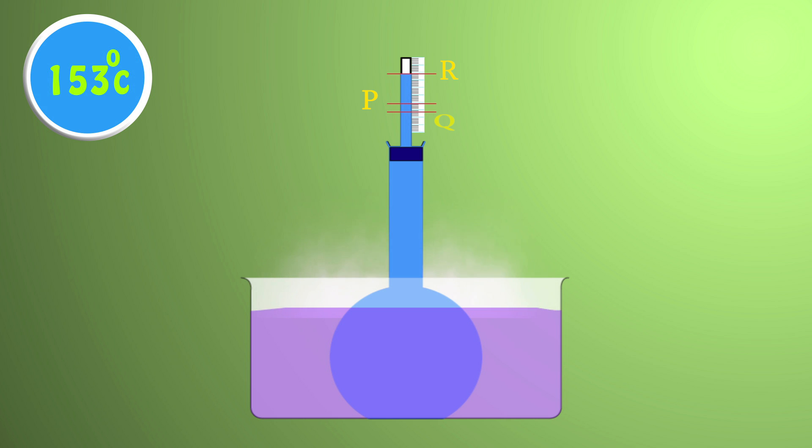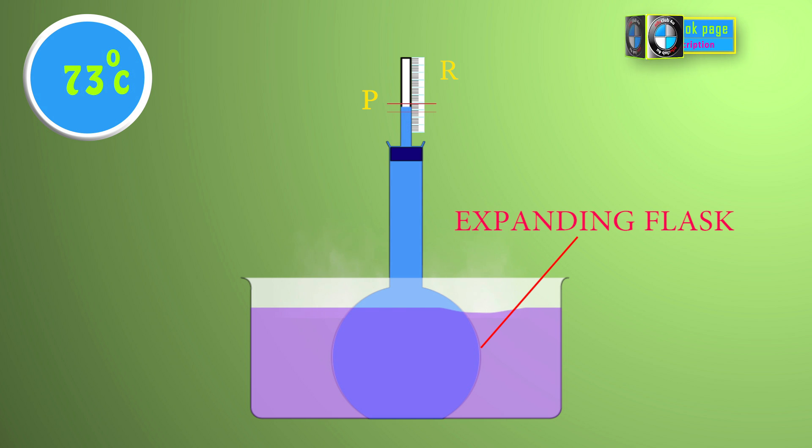Now we have to deduce the reason behind it. As we heat the flask, it absorbs heat and expands suddenly. However, water takes time to expand as it is a bad conductor of heat. So the level of liquid drops initially from P to Q.